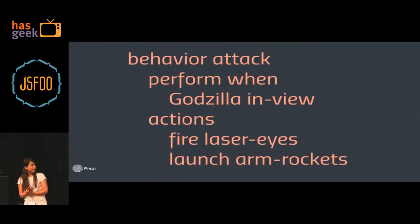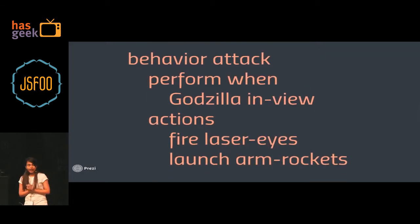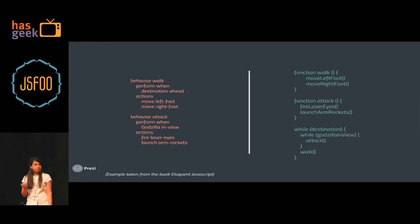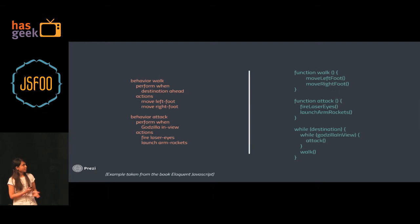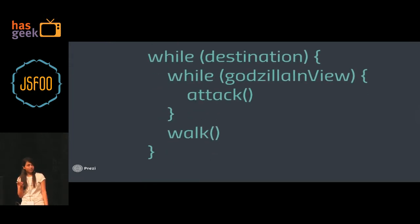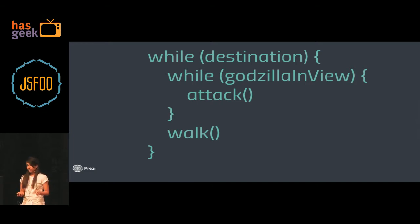Another behavior can be 'attack', which is performed when Godzilla is in view, and the actions to be performed could be fire, laserize, launch, arm rockets. If you were to translate this to JavaScript, we just define functions walk and attack which call the methods for the leg movements and the attack, and then we run the program in a loop where it says: while you see the destination, keep walking. There's also an inner loop which says if Godzilla is in view, attack.